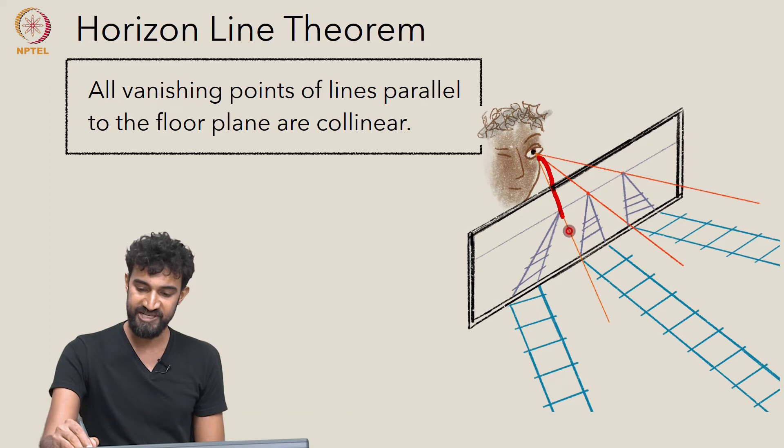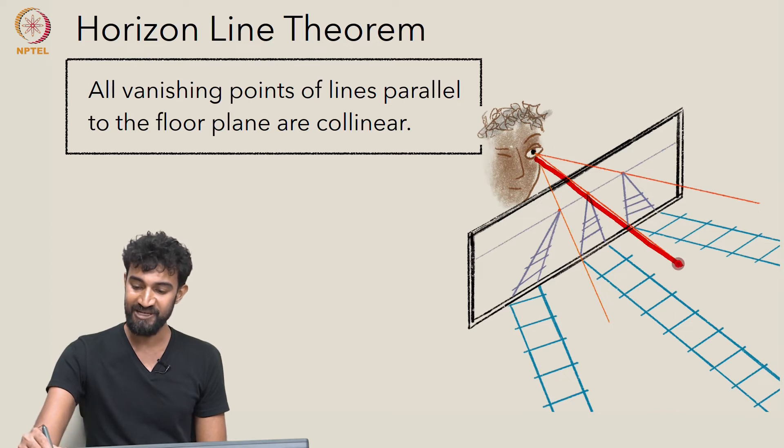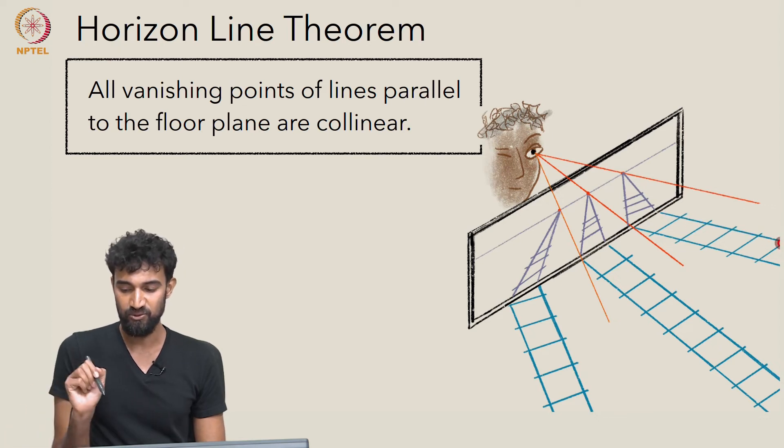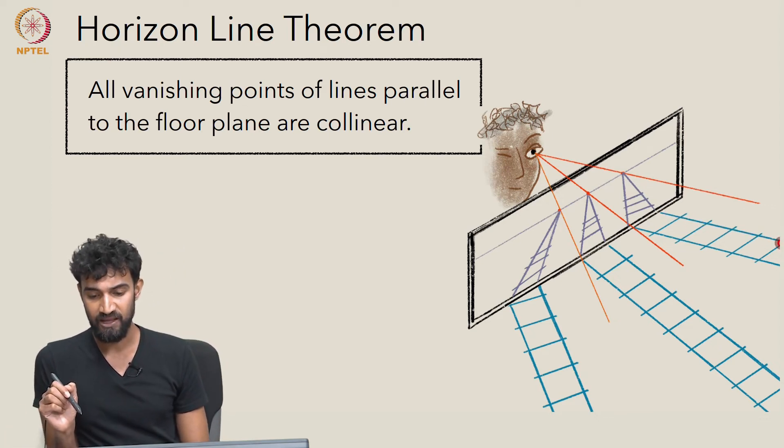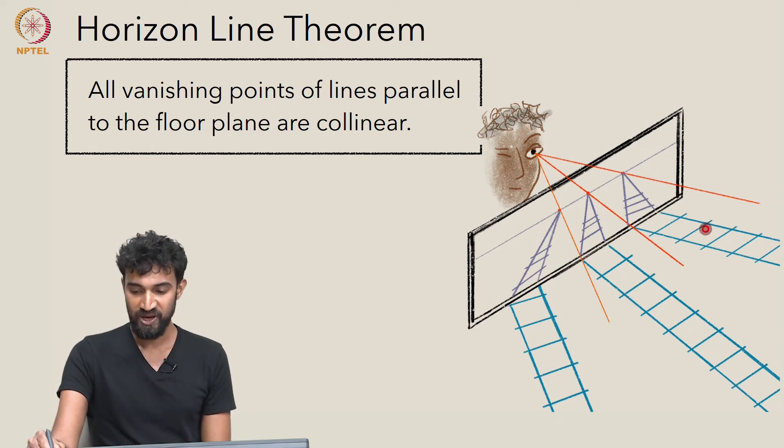The limiting sight line for each set of railway tracks is parallel to those tracks. And all of these railway tracks are parallel to the ground plane.